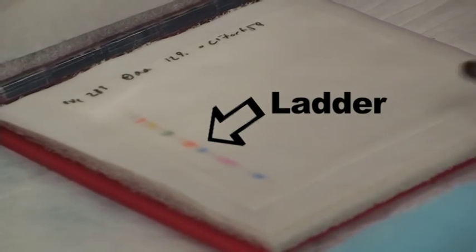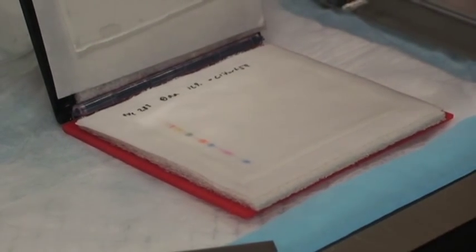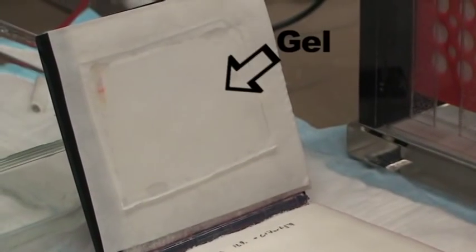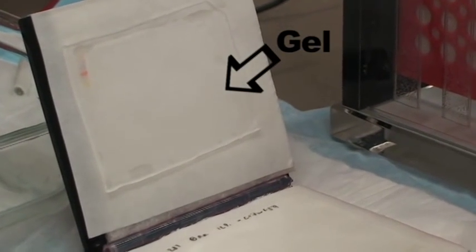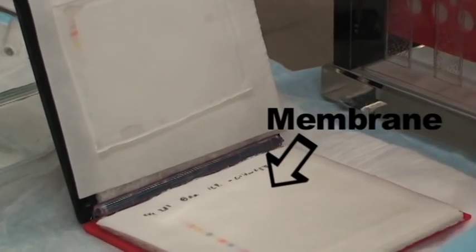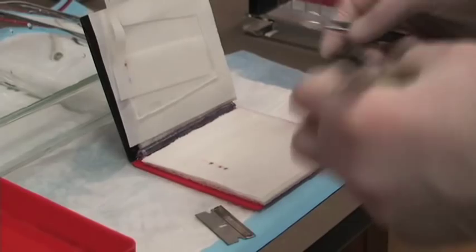Seeing that the ladder has transferred to the membrane is one of the ways we know our transfer step worked. Each of those colors in the ladder represents a different protein of a known size, so we can compare our protein samples to the ladder.